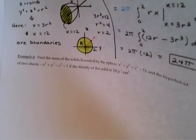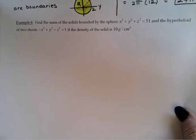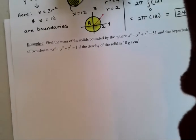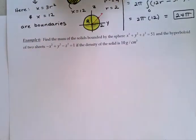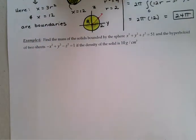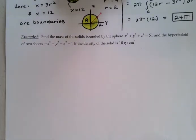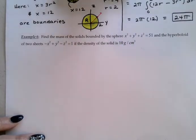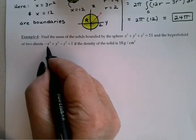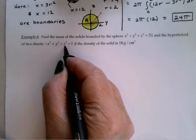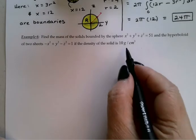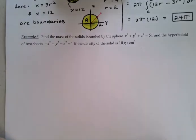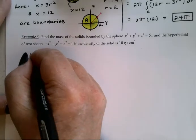One last example here. Example 6. This time we want the mass of the solids bounded by the sphere x-squared plus y-squared plus z-squared equals 51 and the hyperboloid of two sheets minus x-squared plus y-squared minus z-squared equals 1 given a density of 10 grams per cubic centimeter. Well once again I'm going to try and sketch this although we may go to Maple for a prettier graph.